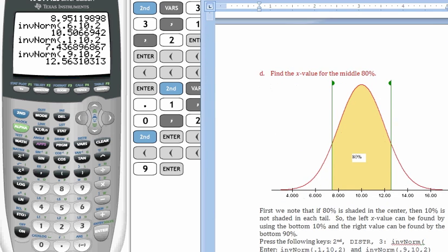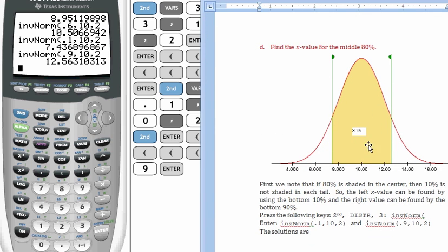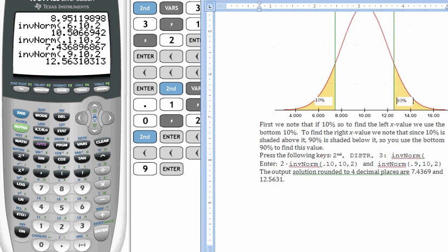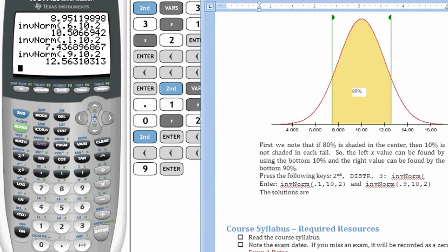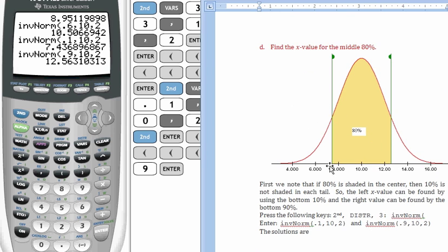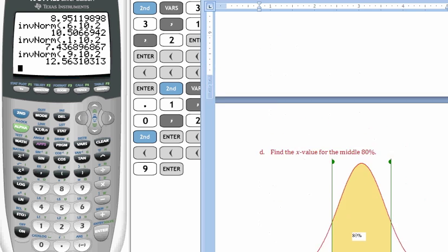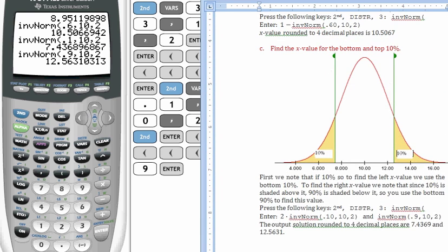Going on to the last one. Here we are looking for the shaded region of 80% in the center. Notice that this is very similar to what we did up here. In fact, this is the 80% shaded in the middle with 10% on each side. This is the same thing. So these solutions are going to be the exact same solutions that we had up here. So there's no need to do anything on the calculator for this one.